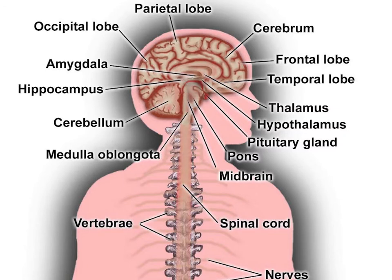The PNS is divided into somatic and visceral parts. The somatic part consists of the nerves that innervate the skin, joints, and muscles. The cell bodies of somatic sensory neurons lie in dorsal root ganglia of the spinal cord.